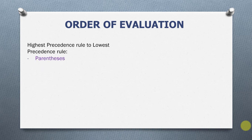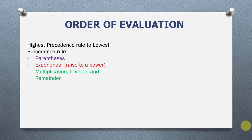Parentheses has the highest priority. This means Python will first calculate everything inside the parentheses. The next thing we consider is exponential — it has the second highest priority. If there's an exponential in our expression, we evaluate that next after considering the parentheses. Then we consider multiplication, division, and remainder. After that, we look at addition and subtraction. And finally, we look at left to right. I'm going to explain what this means, but let's look at an example first.